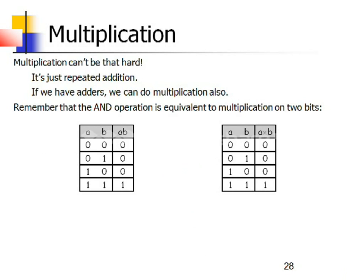Now let us see binary multiplication — how we perform multiplication with binary numbers. Multiplication is just repeated addition, so binary multiplication is done with the help of adders. Remember that the AND operation is equivalent to multiplication of 2 bits. Looking at the AND truth table: if 0 is multiplied with anything, the result is 0; only when both inputs are 1 do you get output 1 — identical to binary multiplication. Therefore, the AND gate performs multiplication of 2 bits.